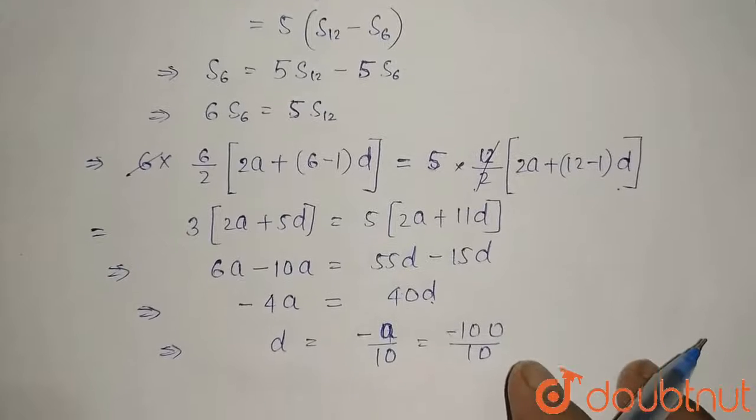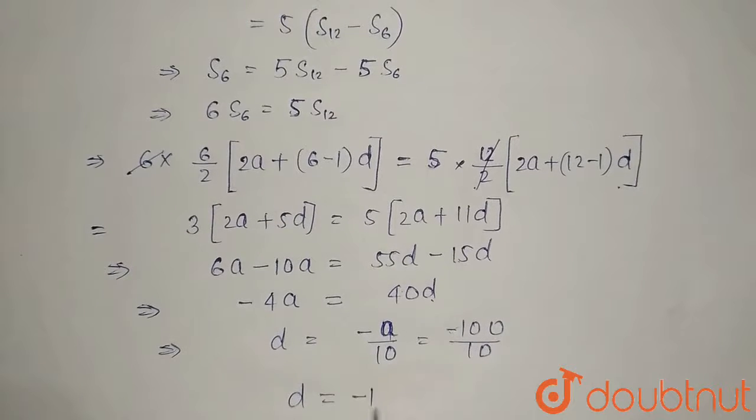So our d will be d equals -10. So the common difference of this AP will be -10.